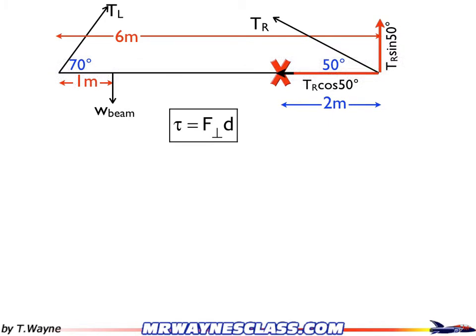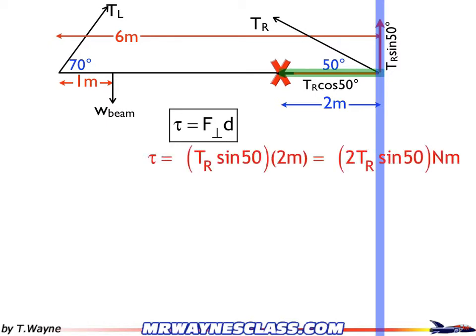But TR sine 50, if I extend it up so I can see it a little bit easier, I can draw a line perpendicular between X and TR sine 50. That's 90 degrees. So now all I need is the length of that line, 2 meters, times the amount of force, which is TR sine 50. So the torque is TR sine 50 times 2 meters, which is 2TR sine 50 newton meters. And torque doesn't have its own unit. It's just a newton meter.